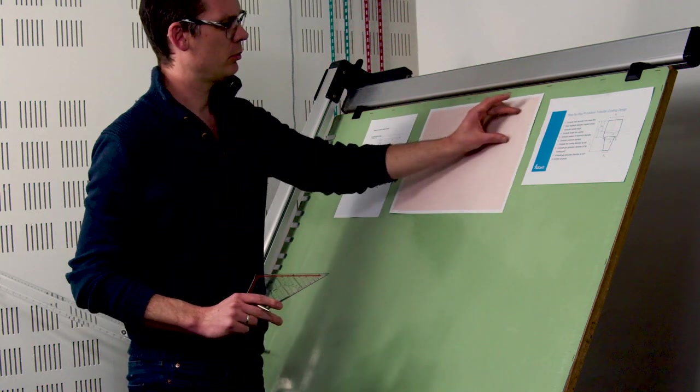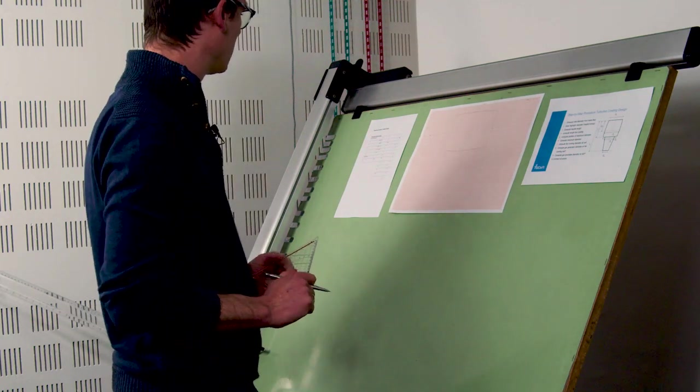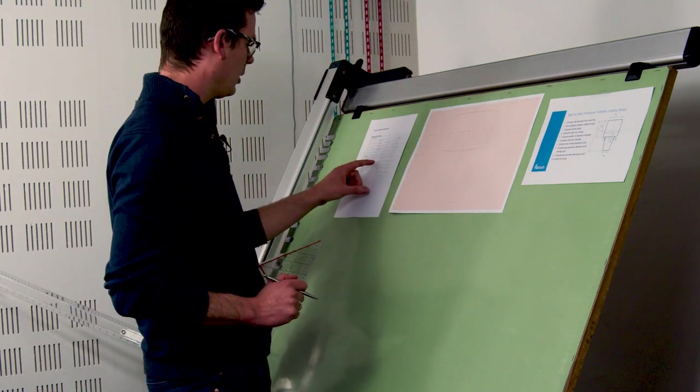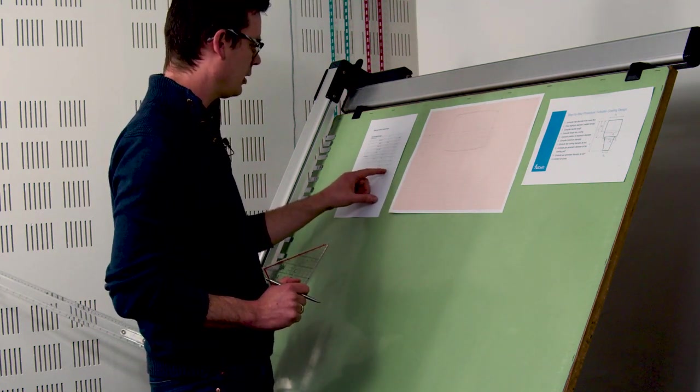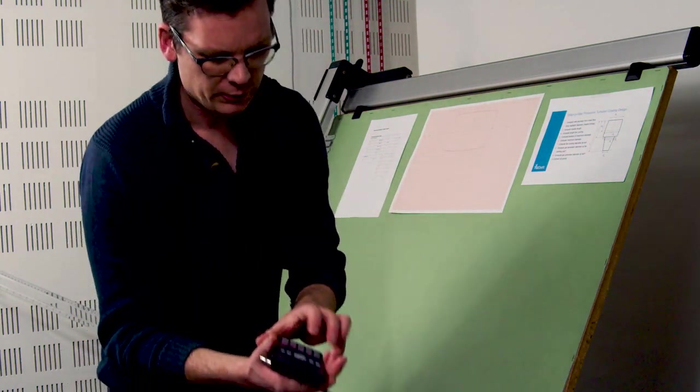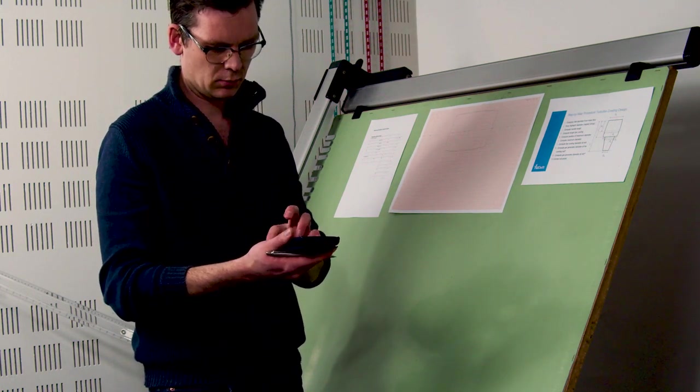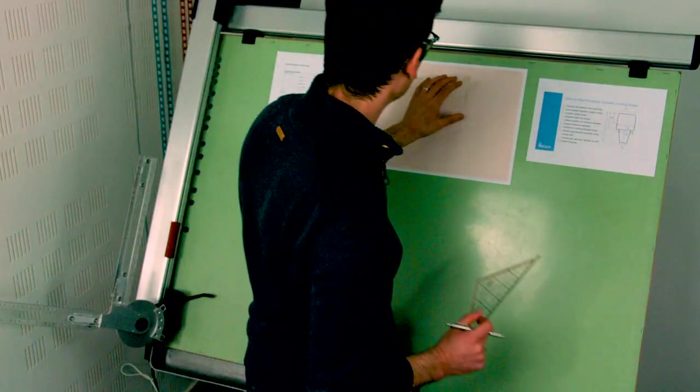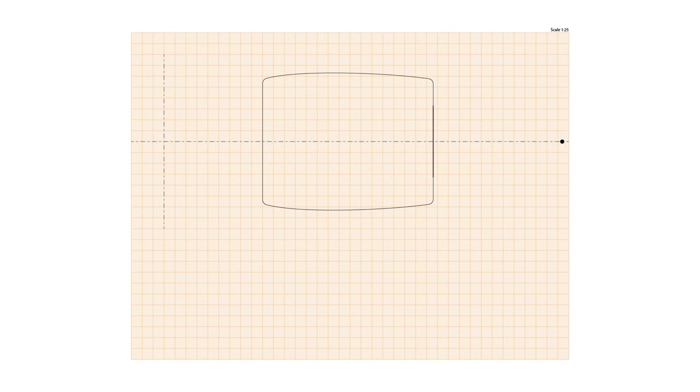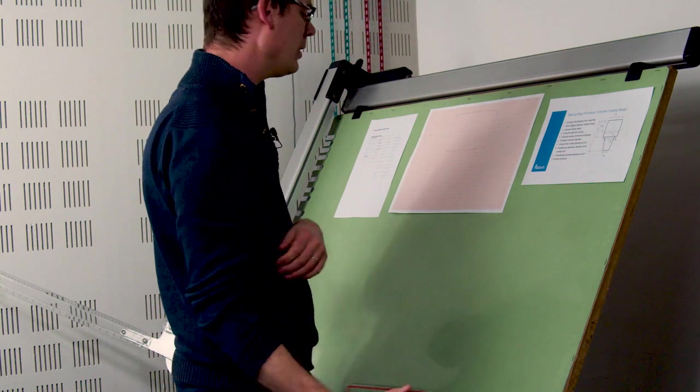And now we want to draw the cowling around the gas generator. So the first thing that we do is we look at the gas generator diameter at the beginning, which says here is 1.64 meters. 1.64 gives me a radius on this drawing of 3.3 centimeters. And so that's the starting point. And now just need to compute the end of the gas generator.